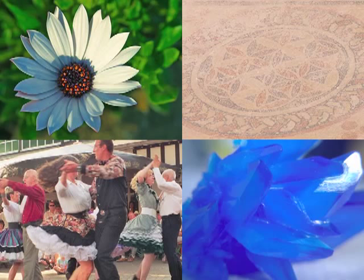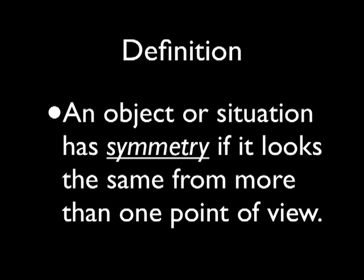Math can help us get specific about how a situation has symmetry, but first we have to answer the basic question: what is symmetry? So here's our working definition. An object or situation has symmetry if it looks the same from more than one point of view.